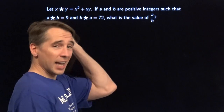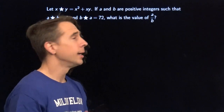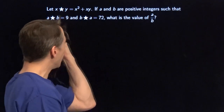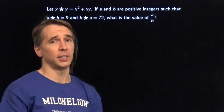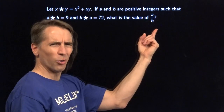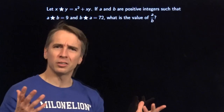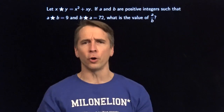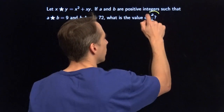They define x★y as x squared plus x times y. We're told a and b are positive integers such that a★b is 9 and b★a is 72. We have to find the value of a over b. That's a really weird thing to be looking for — we're not looking for a, we're not looking for b, we're looking for a over b. That's weird, so I'm going to circle it.